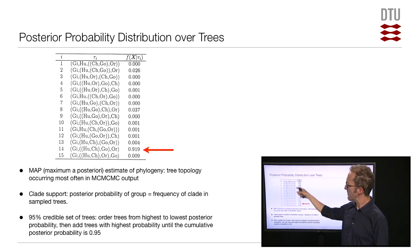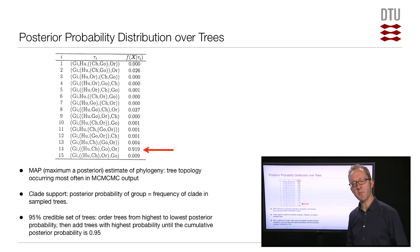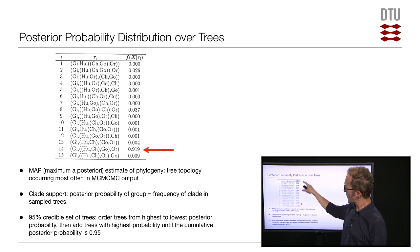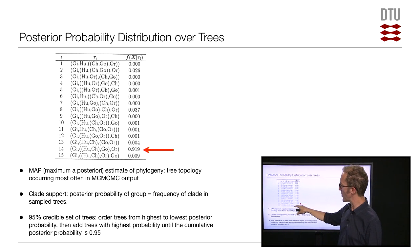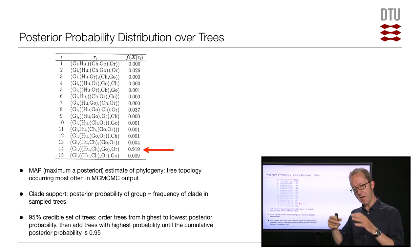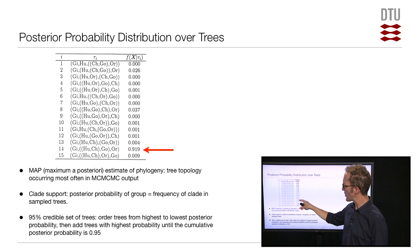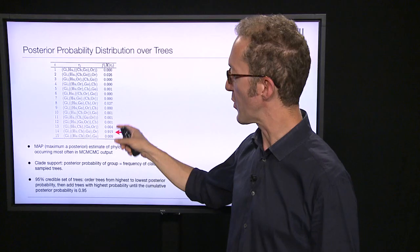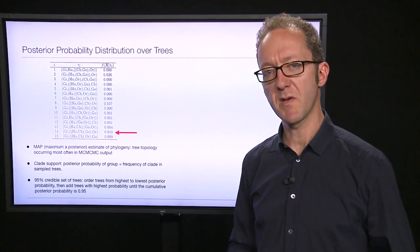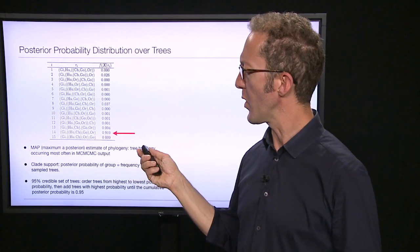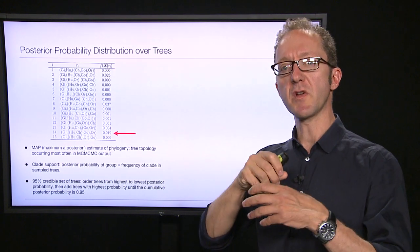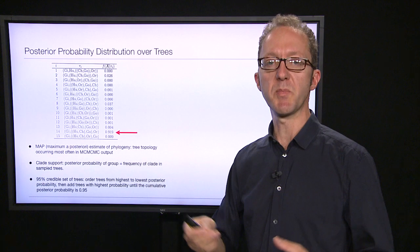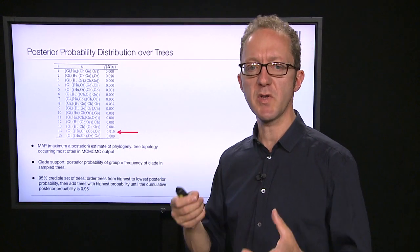This gives us the maximum a posteriori (MAP) estimate of tree topology, as well as clade support — the probability of having some particular group in the data, found by summing posterior probabilities across all trees containing that clade. We can also construct a 95% credible set of trees by sorting trees from highest to lowest posterior probability and including all trees until the accumulated probability reaches 95% or more. This provides a confidence interval for trees. Overall, this way of doing analysis yields a posterior probability distribution quantifying how much we believe in different possible parameter values and different possible trees.